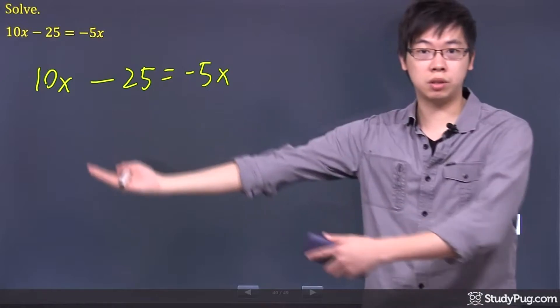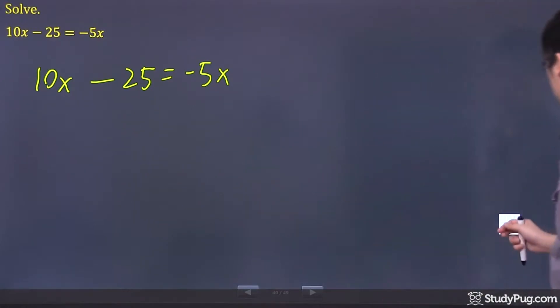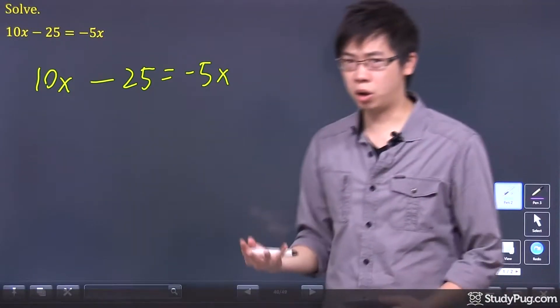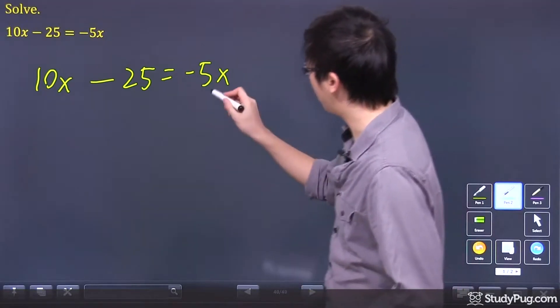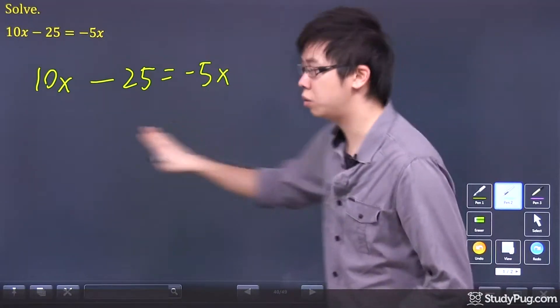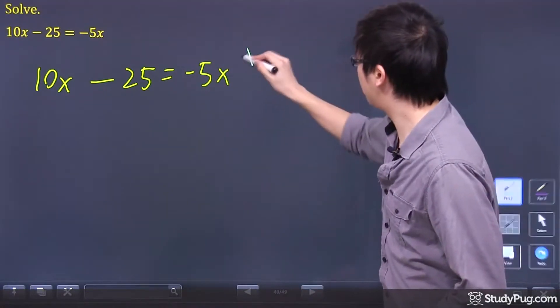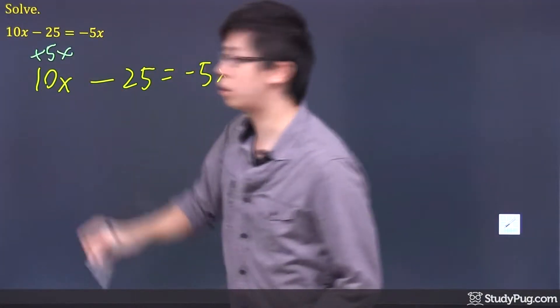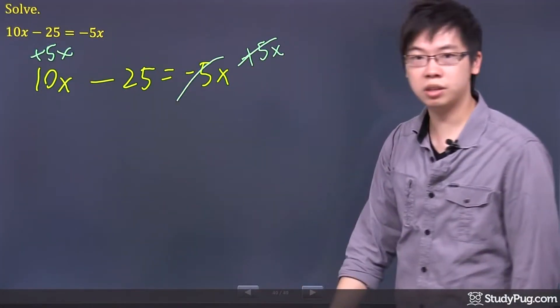You want to make all the x to the same side. It doesn't matter which side you make, but try to make them positive as you do the math. I'm going to move the negative 5x here to the other side. How do I do that? By adding the 5x to both sides, because this will cancel these guys.